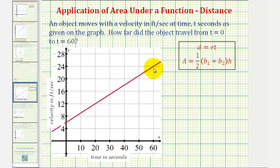Which means we want to find the area of this shaded region. And because this shape is a trapezoid, we can use the area formula.